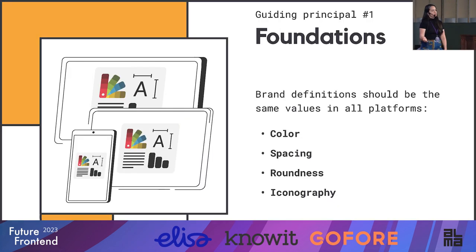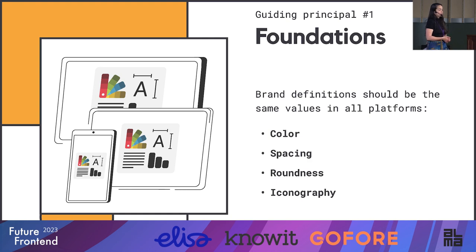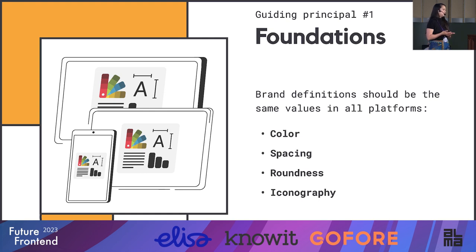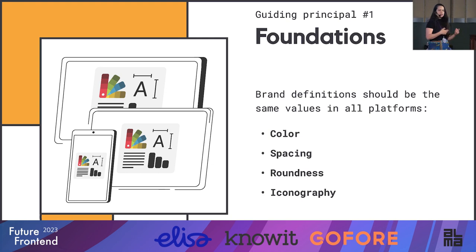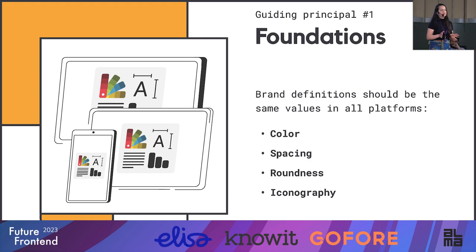Let's start with our guiding principles. This is based on my own experience with other UX designers when defining products at previous companies. We can start with the most basic and important one: foundations. It's the brand definitions that should carry the same values across all platforms. The color should be the same, the spacing, roundness, iconography — your brand needs to be recognizable whether it's a web application, iOS, or Android. That can be achieved with design tokens, and that's exactly what it is.